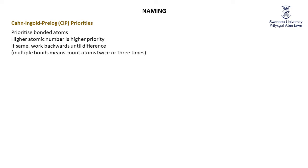Multiple bonds simply mean that an atom counts twice for a double bond, or three times for a triple bond, but we won't see that today. Always best to teach with examples. Here is the first molecule we looked at in the previous slide. The carbon here is bonded to four different groups — otherwise it wouldn't be chiral.